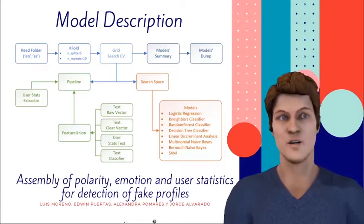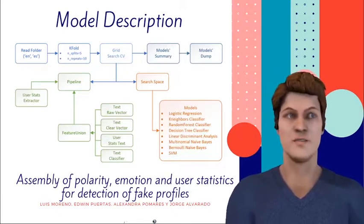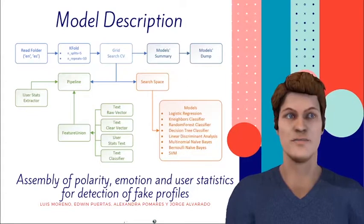Secondly, a five-fold cross-validation was designed. Then we created a feature vector that contains user statistics, and we add the terms resulting from the cleaning and data preprocessing phase.